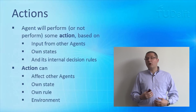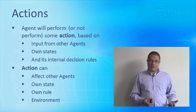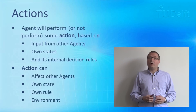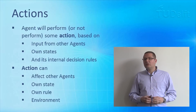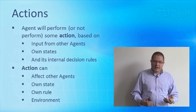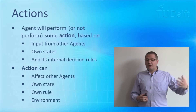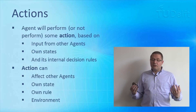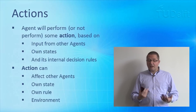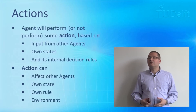The actions are the consequences of the decision-making process. An agent will perform or not perform some action. It is important to realize that agents are autonomous — they can choose not to act. Whereas in object-oriented programming an object always does what you ask it to do, with agents you say it's your turn to act, and the agent considers its environment, considers its state, makes the computation it needs to do, and then decides whether and how to act. These actions can affect other agents, their own rules, their own states, or the environment. It is often through this indirect interaction throughout the environment that the true complexity of the system arises.